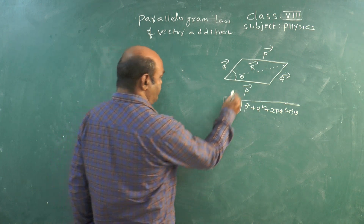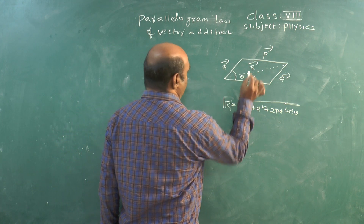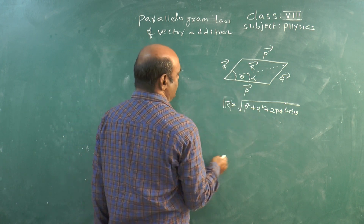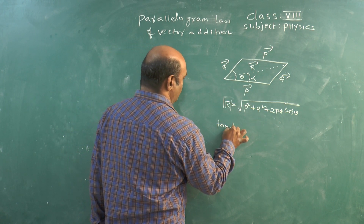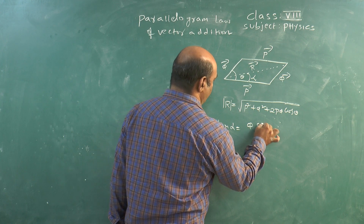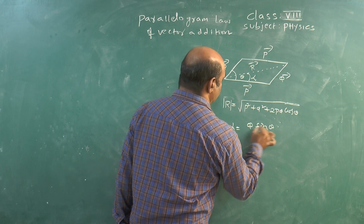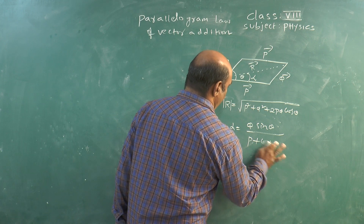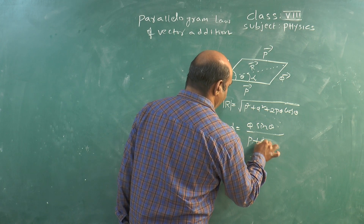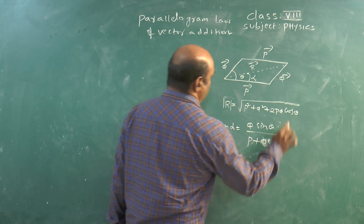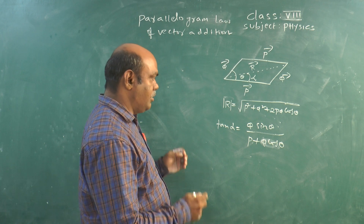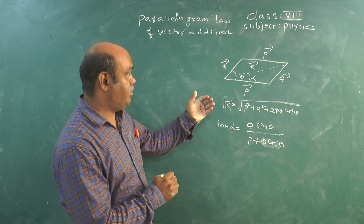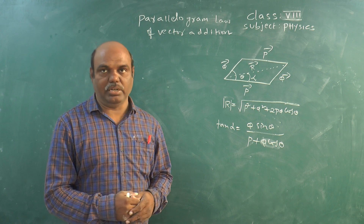And if alpha is the angle between the P vector and the resultant vector, then tan alpha equals Q sine theta divided by P plus Q cos theta. These are the two major formulae we get from the Parallelogram Law of Vector Addition.